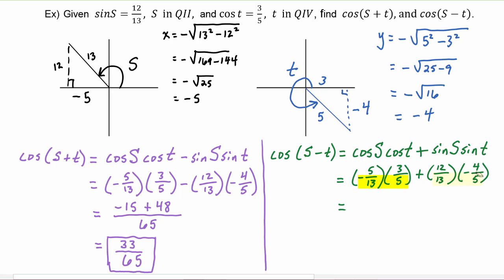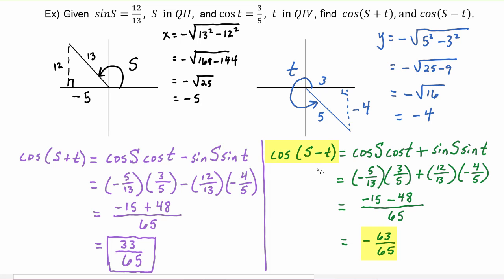Once again, our denominators are both sixty-five, so we keep that common denominator. From the first product, negative five times three is negative fifteen. From the second product, twelve times negative four is negative forty-eight — we're adding those, so this becomes minus forty-eight. Negative fifteen minus forty-eight equals negative sixty-three, and our denominator is sixty-five. So here is the cosine of s minus t.